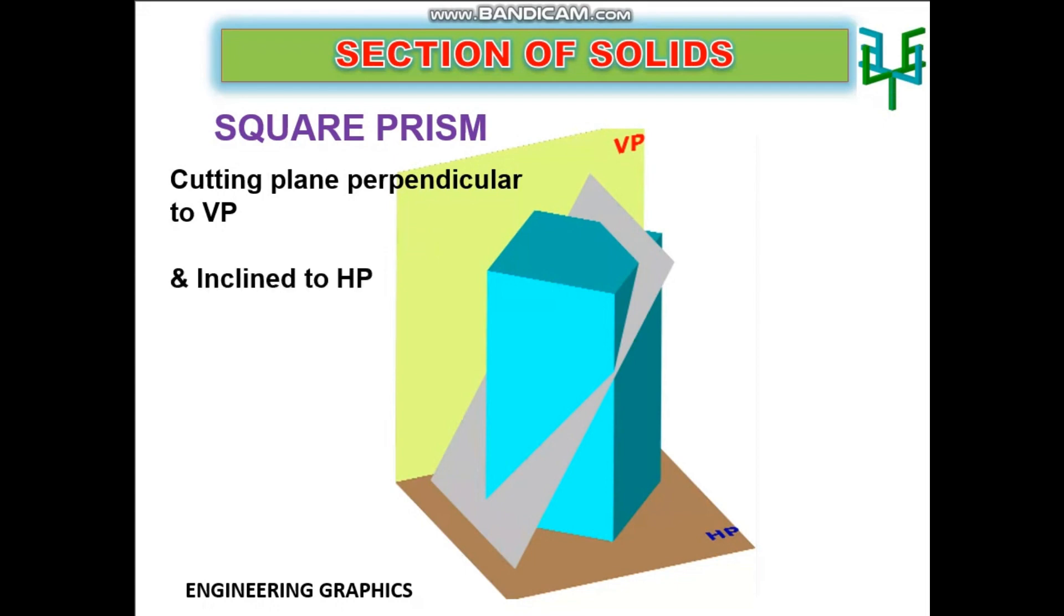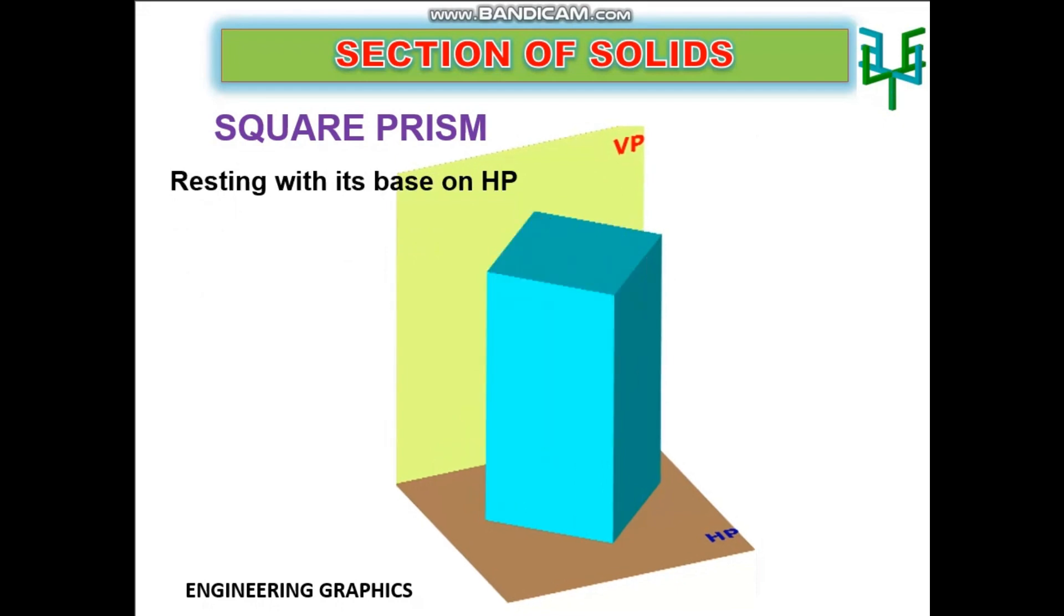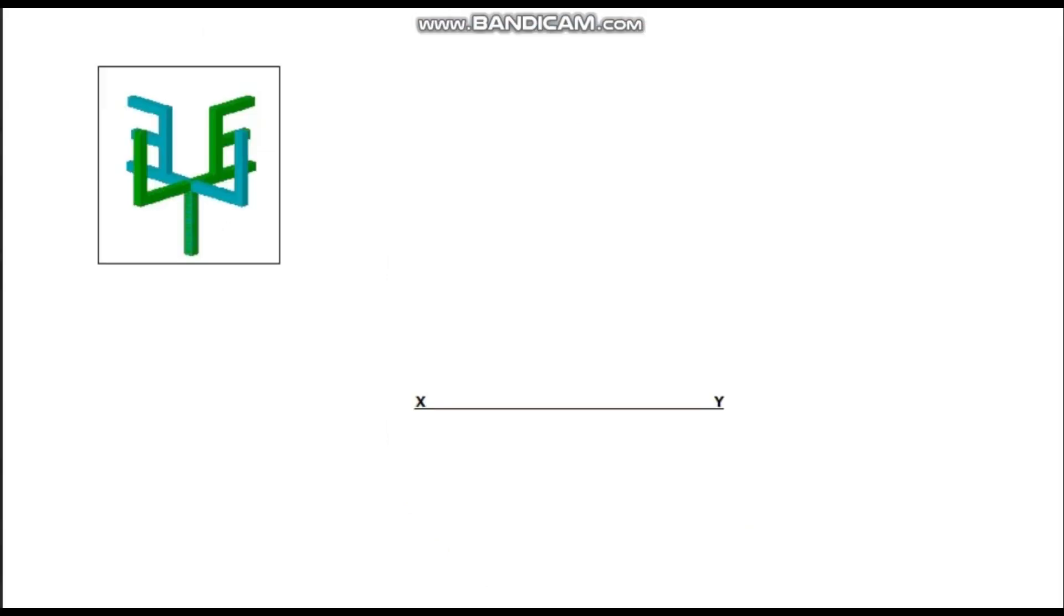Since the prism is resting with its base on HP, its base shape is visible in the plan. Two vertical faces are equally inclined to VP. Therefore the edges of the square in the plan should have 45 degrees to the XY line. Draw the plan below the XY line.